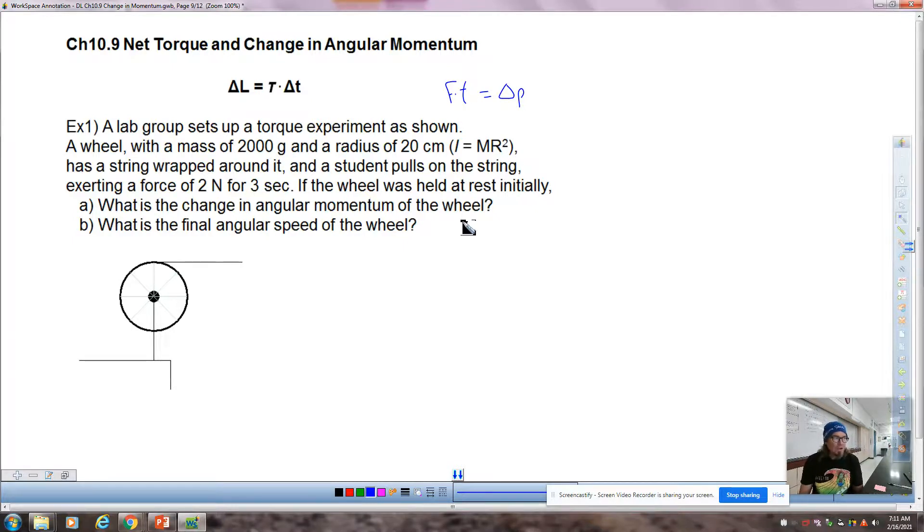I think I have two examples here today. A lab group sets up a net torque experiment as shown. The wheel with a mass of 2,000 grams and a radius of 20 centimeters has a string wrapped around it. A student pulls on the string, exerting a force of 2 newtons for 3 seconds. If the wheel was held at rest initially, part A, what was the change in angular momentum? So let's start with the fact that, if we saw this on a test, especially like a final exam or AP test where we've got everything mixed together, that we identify, first of all, change in angular momentum means that we're looking at this is the money question for part A.